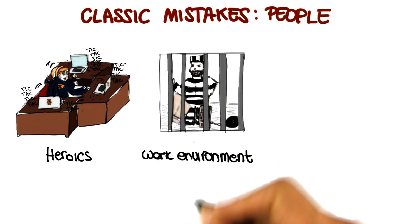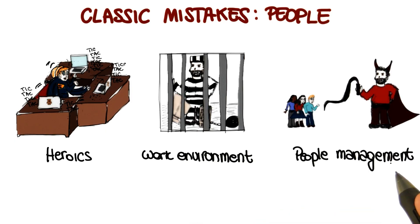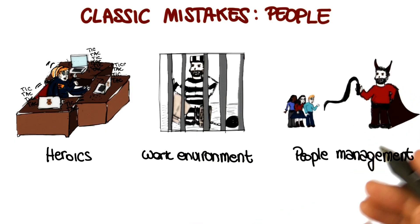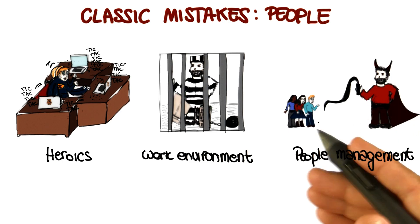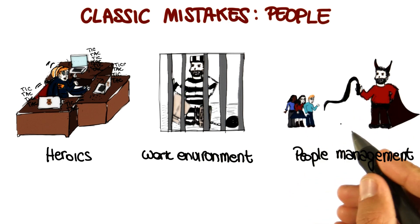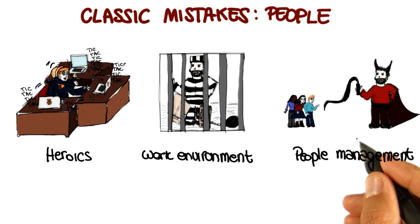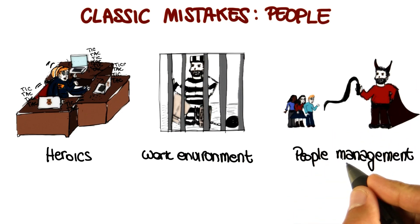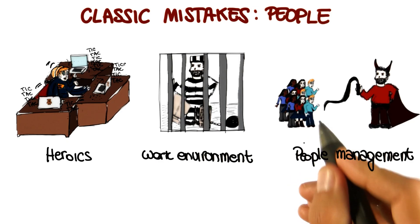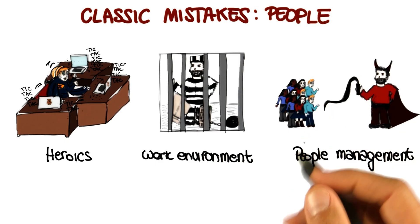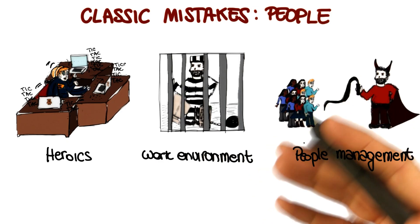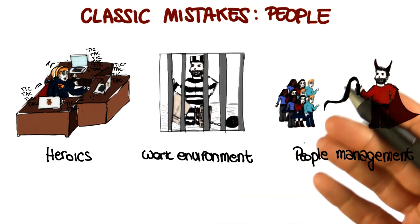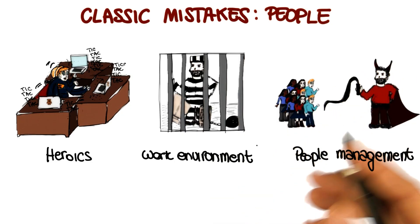Some of the most important people-related mistakes are due to poor people management — for example, lack of leadership, or leadership exercised in the wrong way, which can lead to very unhappy personnel and therefore low productivity, or even people leaving teams. Another classic example of poor management is adding people to a project that is behind schedule, which never works. Why doesn't it work? Because these new people need to be brought up to speed, and that causes further delays rather than improving the project schedule.